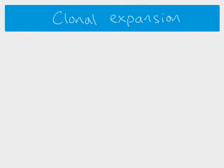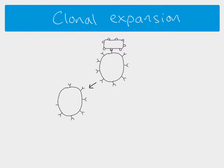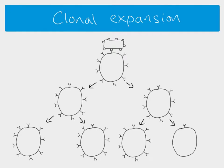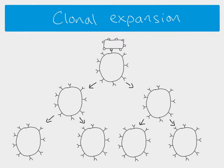The cell that has bound to the antigen has been selected and now divides by mitosis, producing over time many, many copies. Because it's mitosis, all these cells are identical to the original and therefore have antibodies that also match the antigens on this pathogen. The whole point is that we've got a pathogen in the body which the B cell recognized. Since there aren't just one but thousands or millions of pathogens, the more cells we have that can recognize it, the more quickly we'll be able to destroy it.